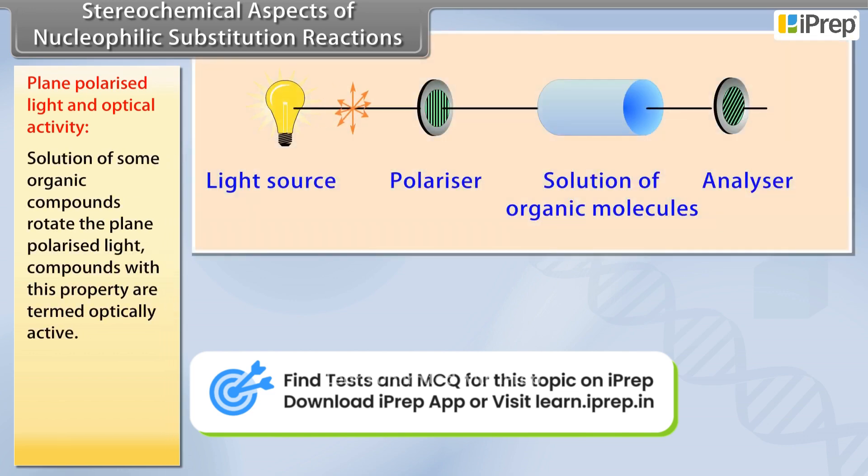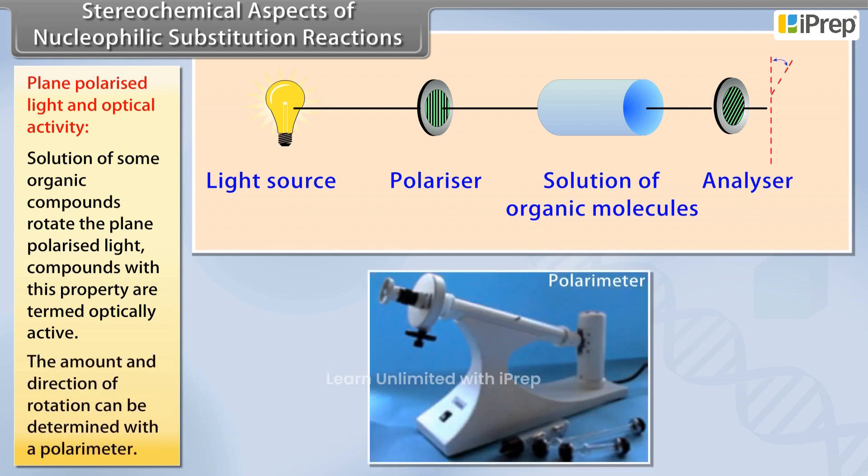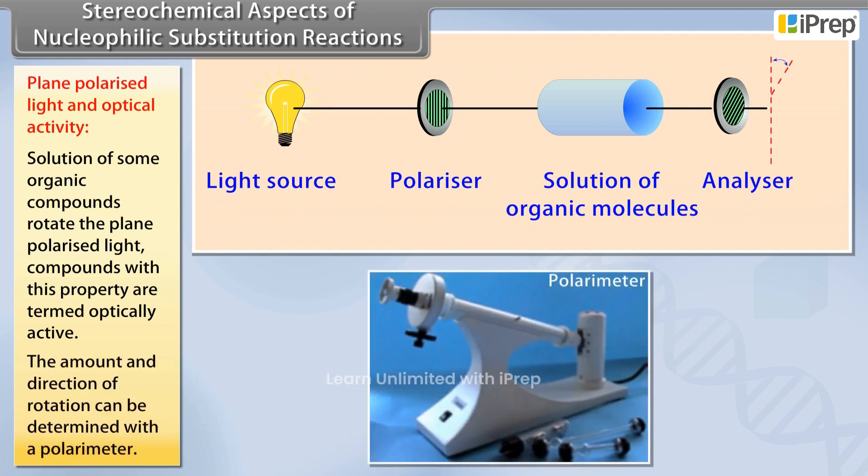Solutions of some organic compounds rotate plane polarized light. Compounds with this property are termed optically active. The amount and direction of rotation can be determined with a polarimeter.